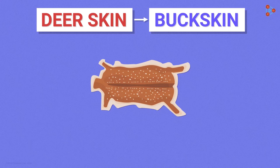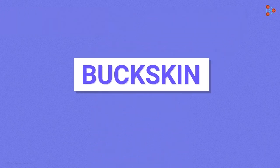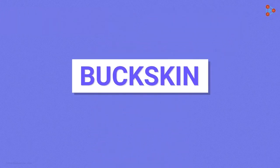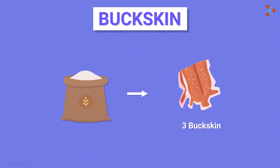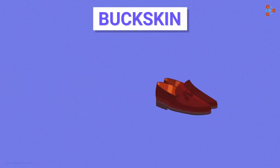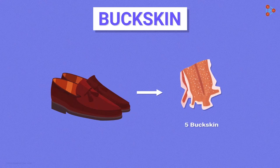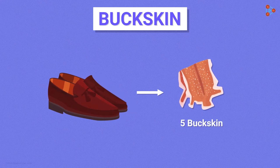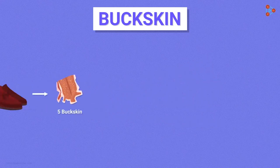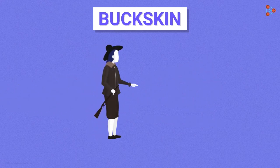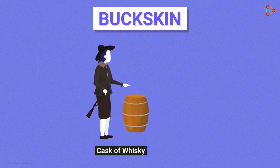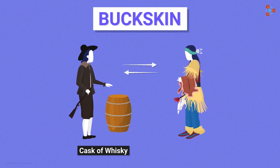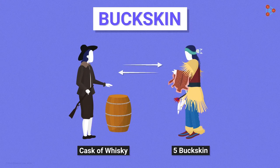People at that time used to value things in terms of buck skin. For instance, 10 kilograms of rice for 3 buckskins, a pair of moccasins for 5 buckskins, and so on. One recorded example is where a cask of whiskey was traded by European settlers to Native Americans in exchange for 5 buckskins.